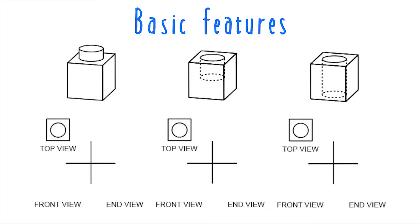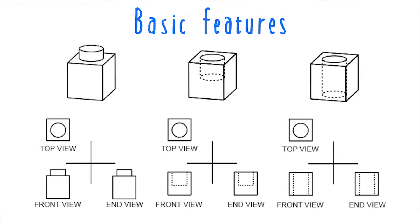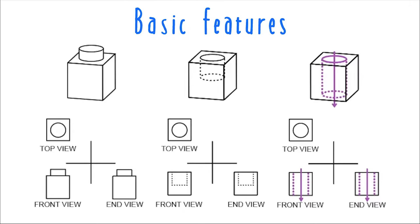But in top front end problems, you're always given two views. So at least one of the views you're given will make it clear what kind of a feature you're looking at. For these objects, either the front view or the end view is going to make it clear that this is a protruding element, this is a cutout that goes only partway through the object, and this is a cutout that goes all the way through the object.